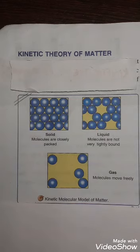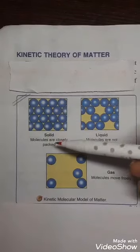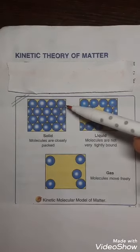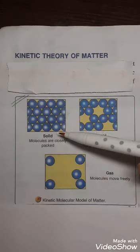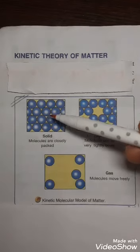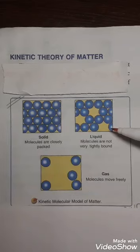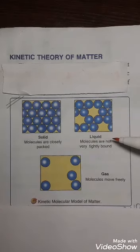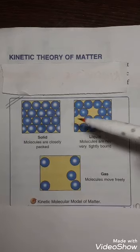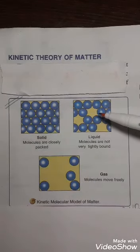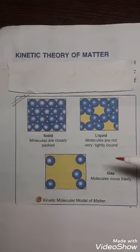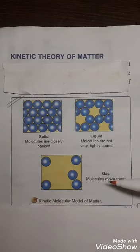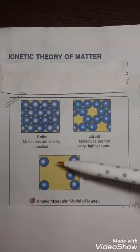With the help of kinetic theory, we will discuss the three different states of matter: solid, liquid, and gas. In solids, the molecules are very closely packed with very little or negligible empty space between them. In liquids, molecules are not as tightly bound as in solids and have a little more vacant space between them. In gases, molecules move freely because there is a lot of empty space and they are not tightly bound.